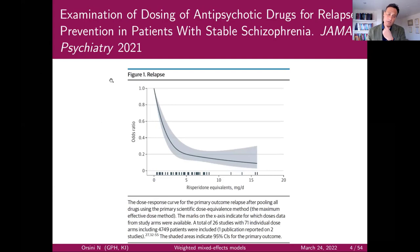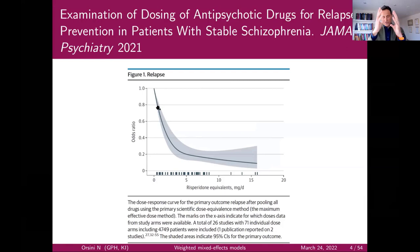This is another study published in JAMA Psychiatry 2021: examination of dosing of antipsychotic drugs for relapse prevention in patients with stable schizophrenia. In this type of study, the overall goal is to find the most effective dose — what dose is associated with most of the drug's effect.